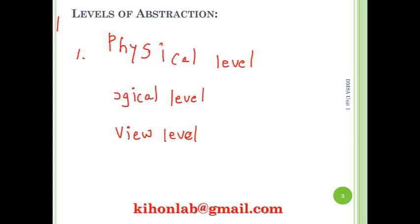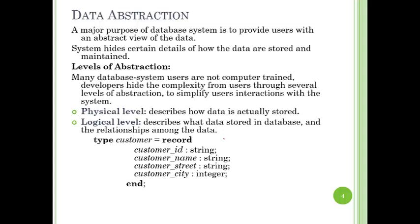These three levels categorize the details of the database system with respect to who is the user at that particular level. At the physical level, what details are to be hidden. At the logical level, what details are to be hidden and what details are available to the user of that level. And at the view level, what details of the physical system of the database are made available to the user. The physical level describes how the data is actually stored, and the logical level describes what data is stored in the database and the relationships among the data.